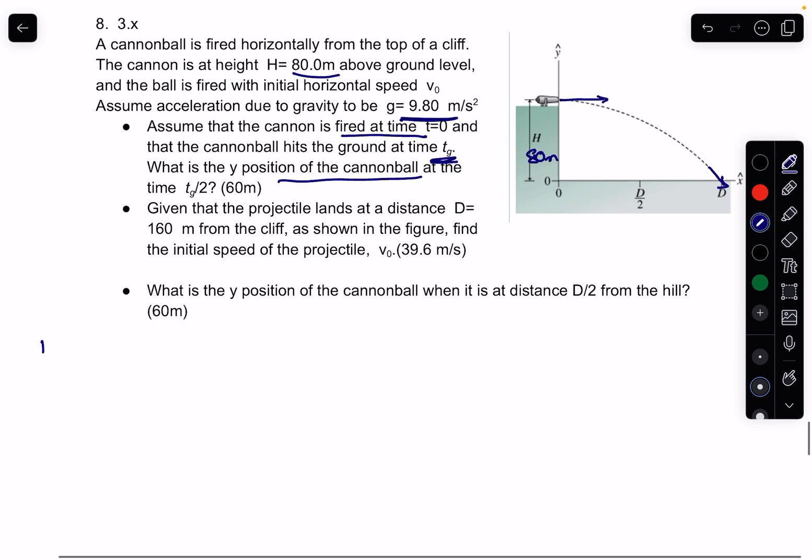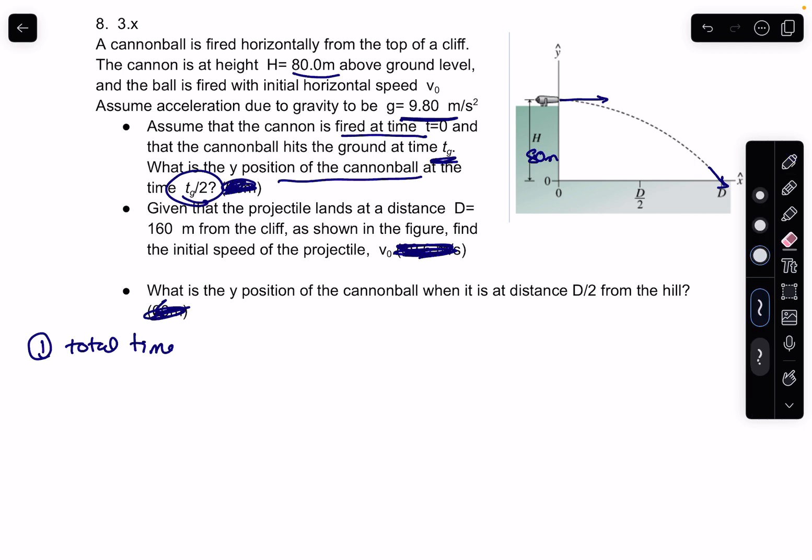So the first thing I did is I solved for the full time, total time. I did that because then I can easily figure out what the total times are in terms of the problem. So total time, what did I do? I used the y equation. So y2, I said y2 equals y1 plus v1yt plus 1 half at squared. Technically g, right, acceleration of gravity.